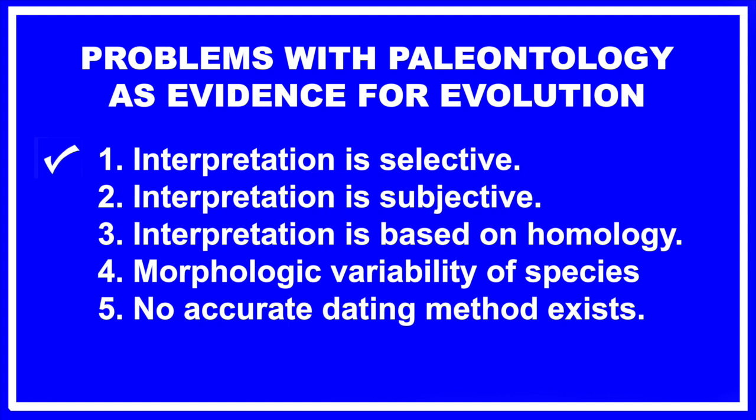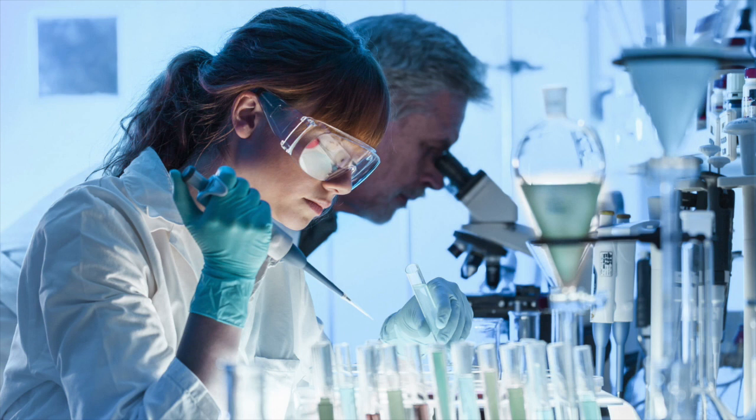For the first point, the interpretation of the fossil record is made by cherry-picking data. This is because the interpretation of fossils is used not to arrive at the truth, but to justify a world view. This is why we refer to the propagation of evolution as a mask of science — this is not science, this is a facade. This is a principle I learned very early in my medical training: science is based on looking at all the data and then weighing the evidence. You can't just look at anecdotes and justify a pre-drawn conclusion. That's what quacks do.